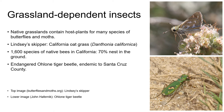70% of California's 1,600 species of native bee nest in the ground, and many of these use grassland habitat for this. Many of these bees also provide important pollinator services for some of California's agricultural crops, which provides yet another important incentive for protecting grasslands, especially those adjacent to farms.